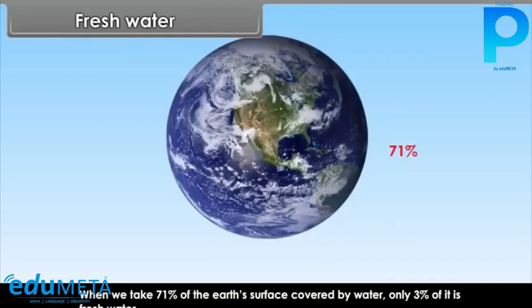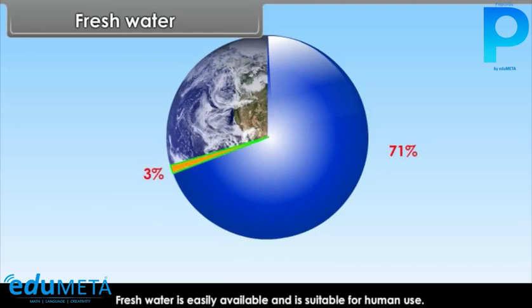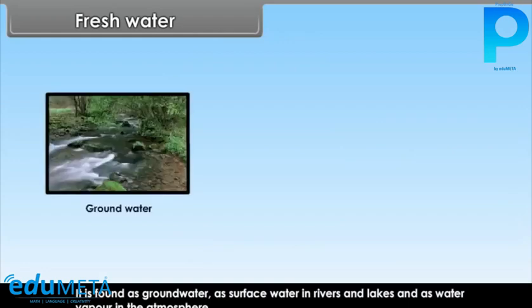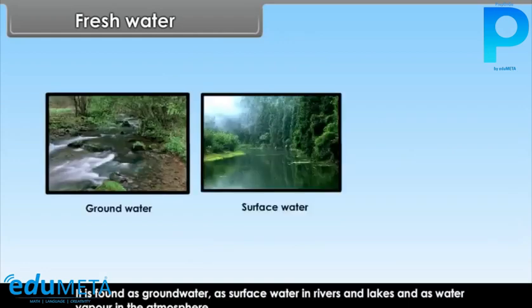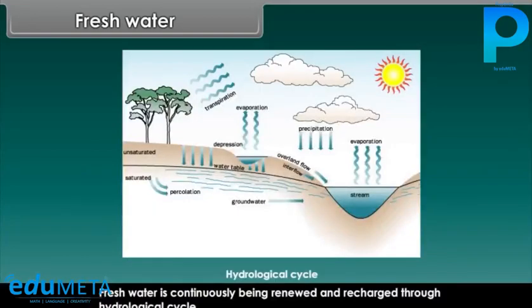Fresh water. When we take 71% of the Earth's surface which is covered by water, only 3% of it is fresh water. Fresh water is easily available and is suitable for human use. It is found as ground water, as surface water in rivers and lakes, and as water vapour in the atmosphere. Fresh water is continuously being renewed and recharged through the hydrological cycle.